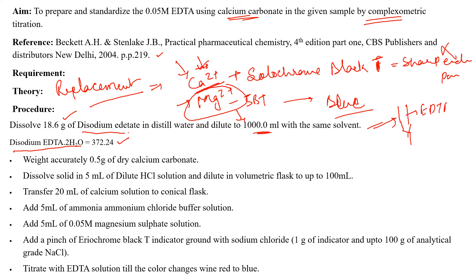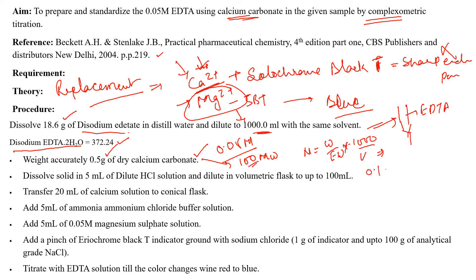In the conical flask, we take calcium carbonate. For a 0.05 molar solution of calcium carbonate, the molecular weight is 100, so the amount comes to 0.5 gram. The formula used is: N = W / Equivalent weight × 1000 / Volume. Substituting values — N = 0.05, equivalent weight = 100, volume = 100 mL — weight comes to 0.5 gram. Since calcium carbonate is not water soluble, we add 5 mL of dilute acid in the beaker.